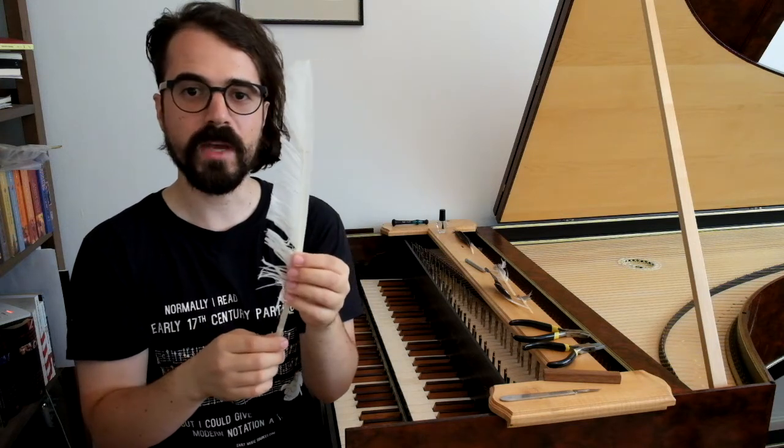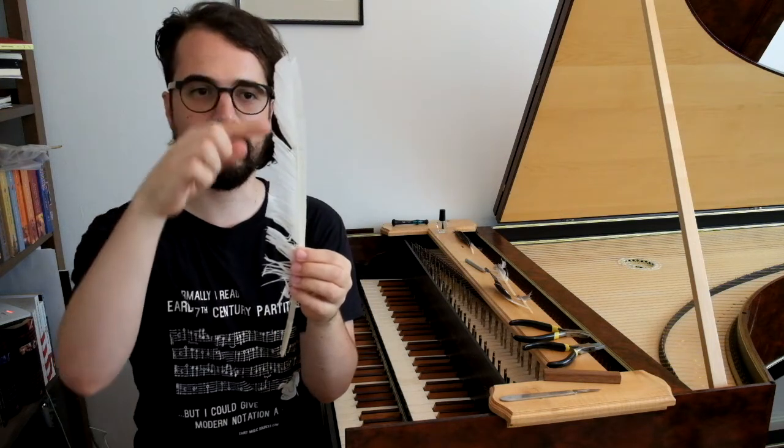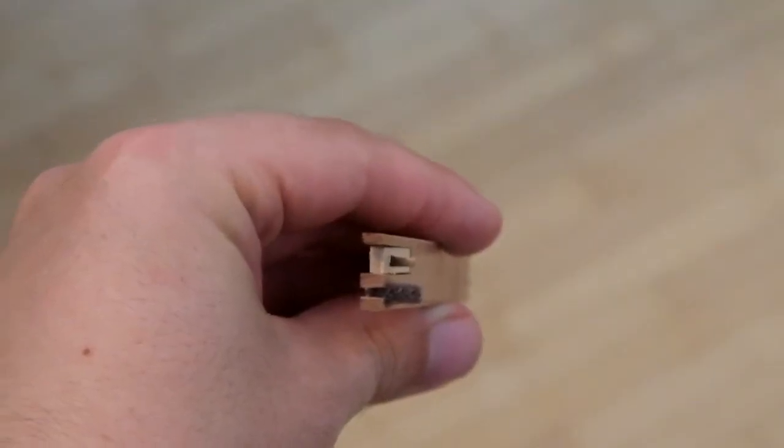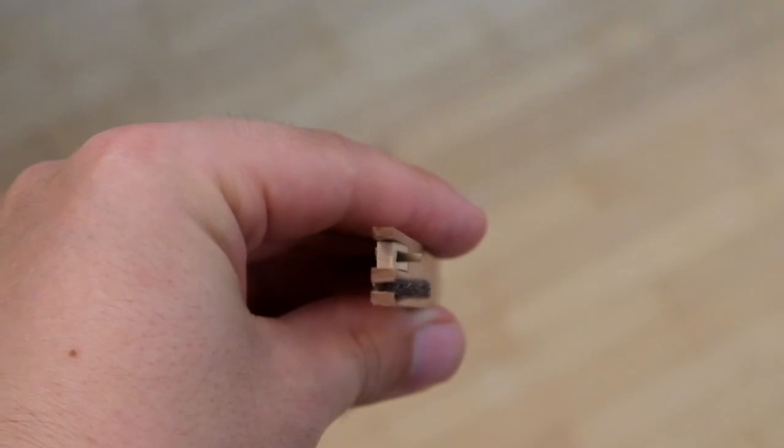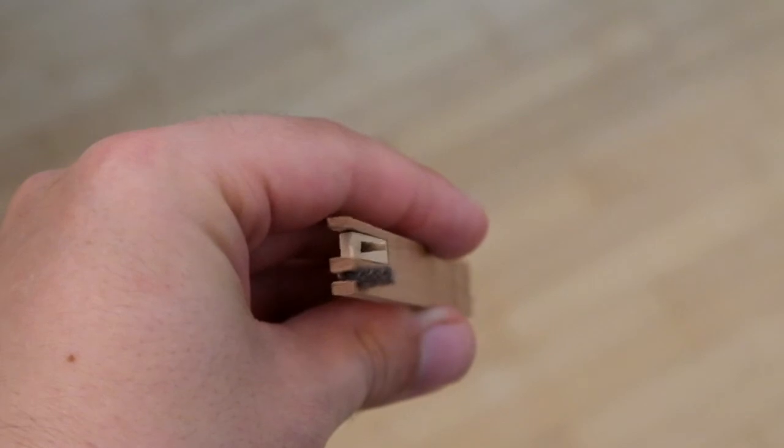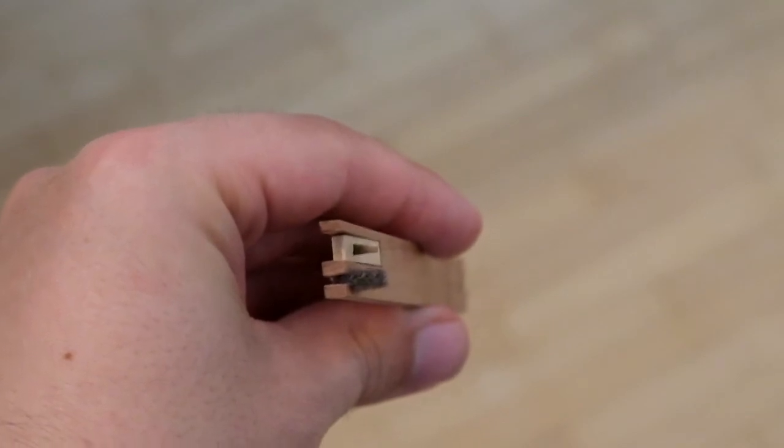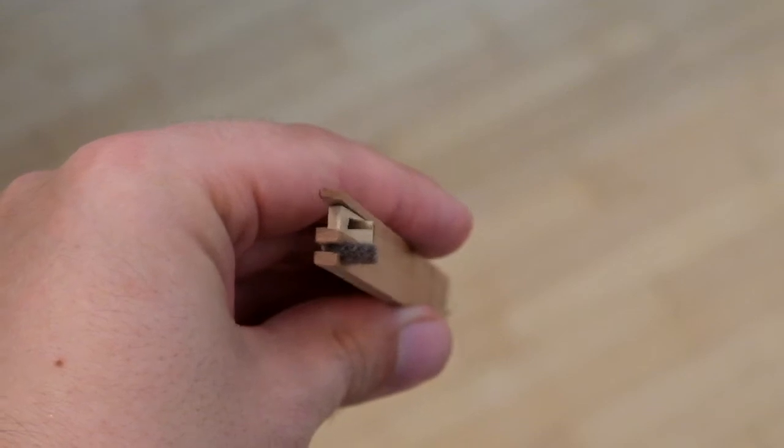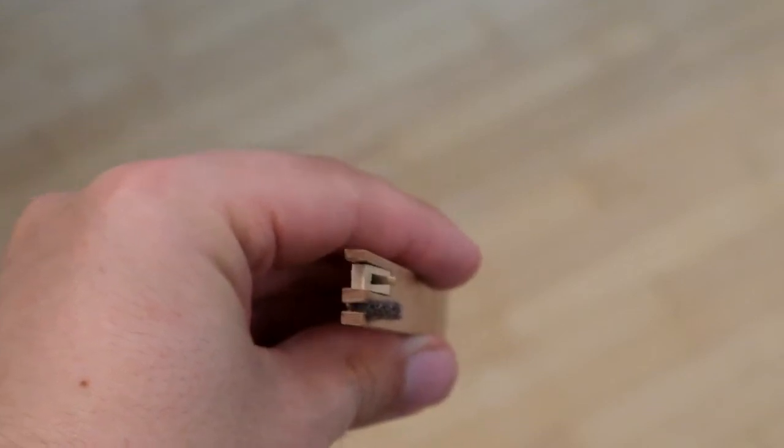I also like to work my way through a feather starting at the tip and ending at the base, as this will yield plectra that are narrower towards the tip where contact with the string is made, and wider where the plectra sits in the tongue of the jack. This results in a sort of wedge shape which will ensure the plectrum sits securely in the mortise of the tongue.